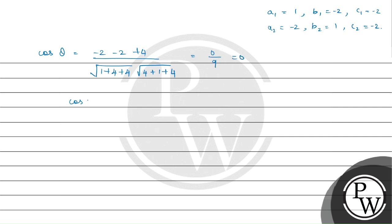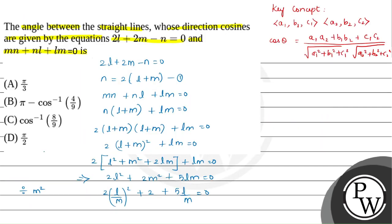Since cos theta equals 0, theta equals cos inverse of 0, which is pi/2. Therefore, the angle between the straight lines is pi/2, and option B is correct. Hope you understood the solution. Thank you!